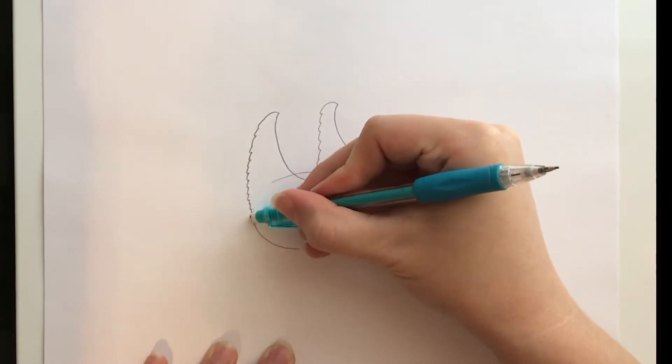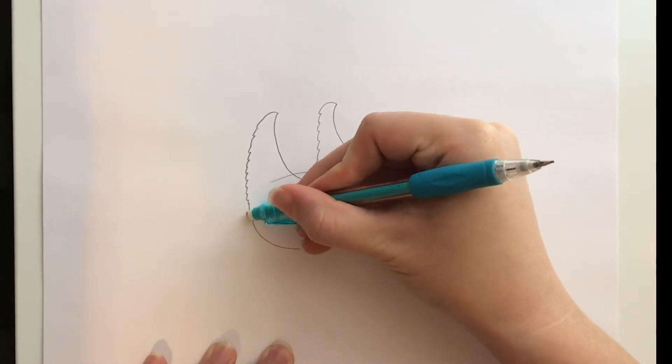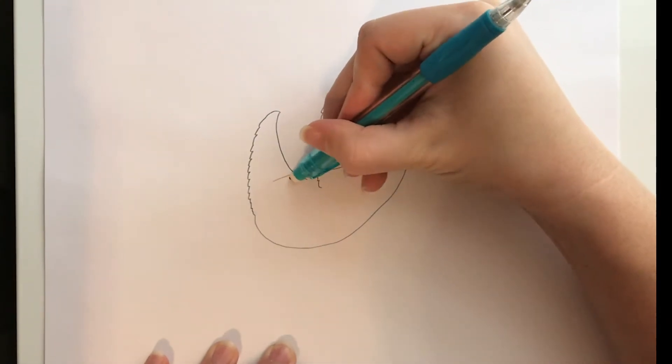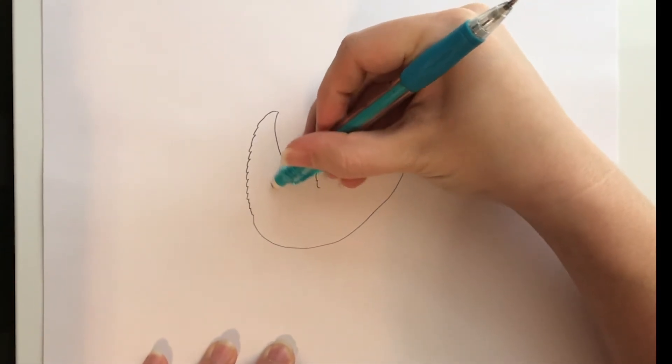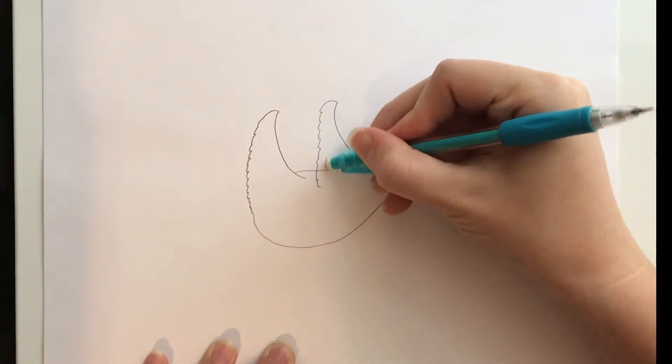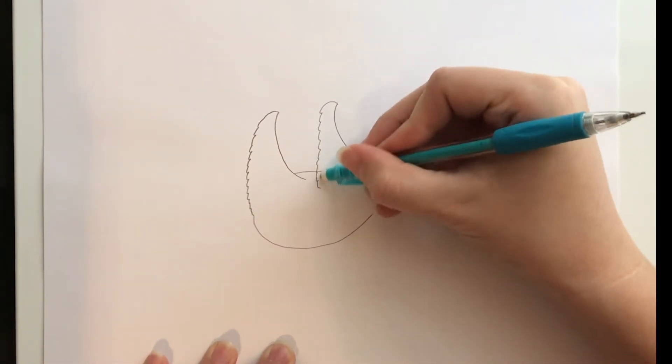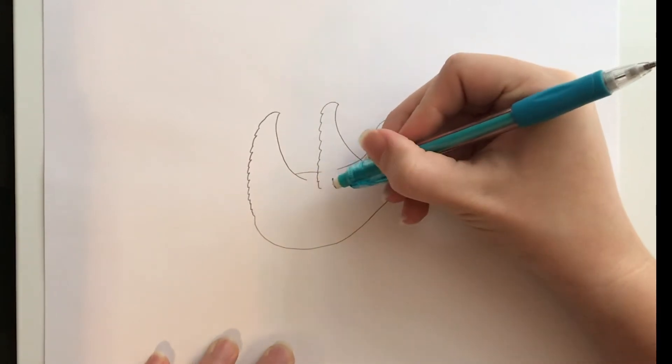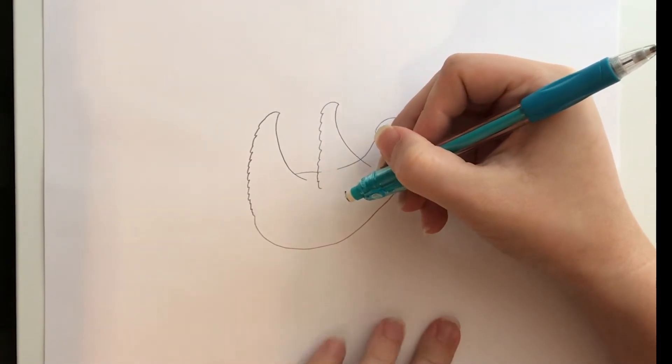Some parts were really easy and some of them took me a long time to get them erased without erasing anything else. So I'm only going to erase the spots of the body that we covered with the legs. Because with the sloth's arm and legs sticking up you wouldn't be able to see that shape of the belly.